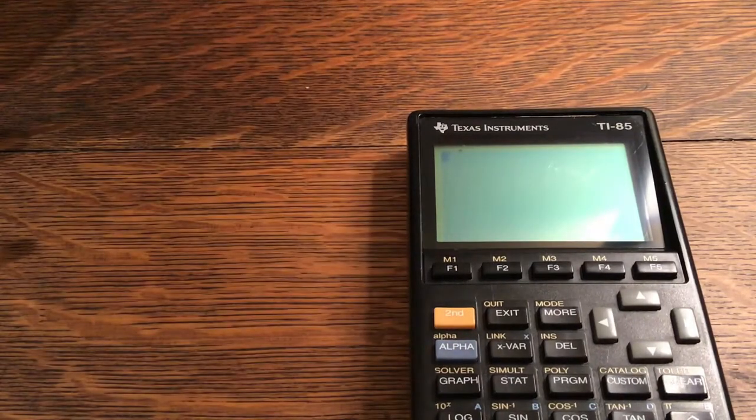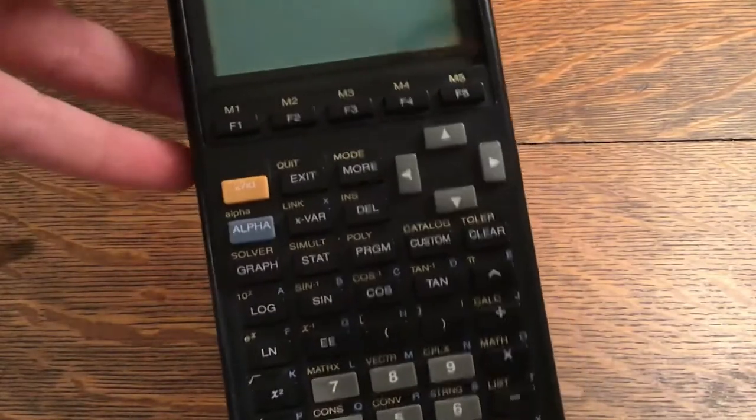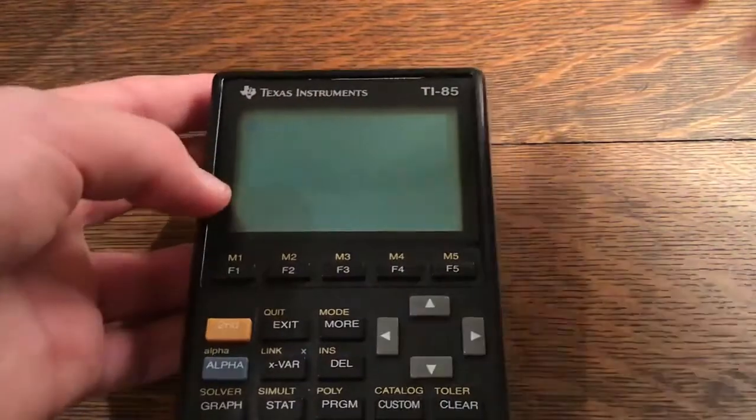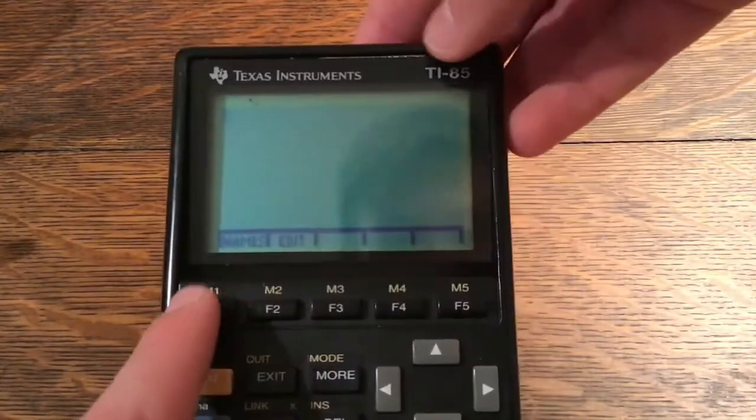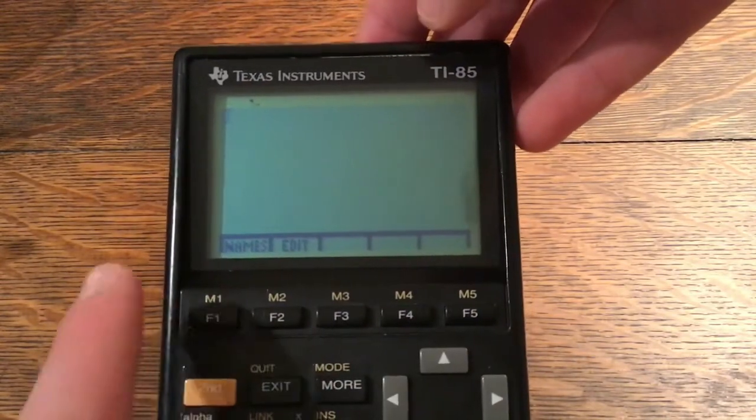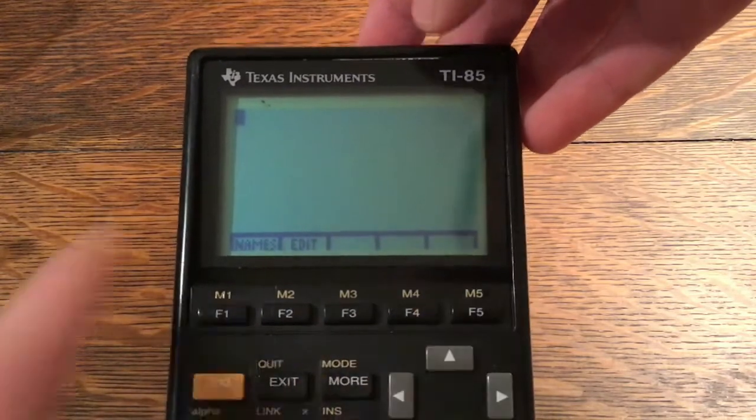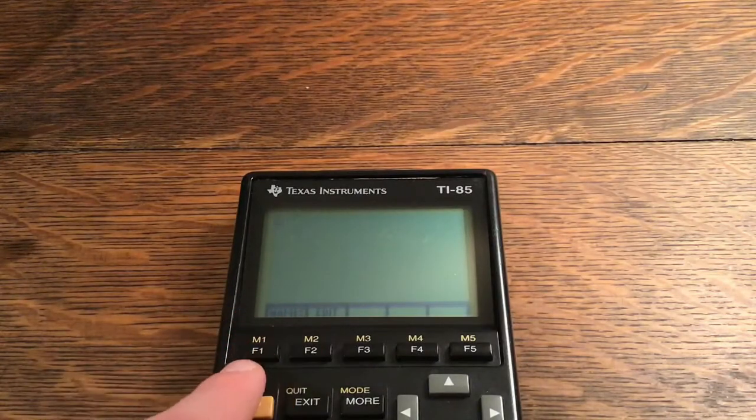So let's show you how you can make that for yourself. First I'm going to play the game. You pick up your calculator and you click the program button, and then you use the F1 or F2, F3, and F4, and F5. If you click the second function it will go M1, M2, M3, M4, and M5.